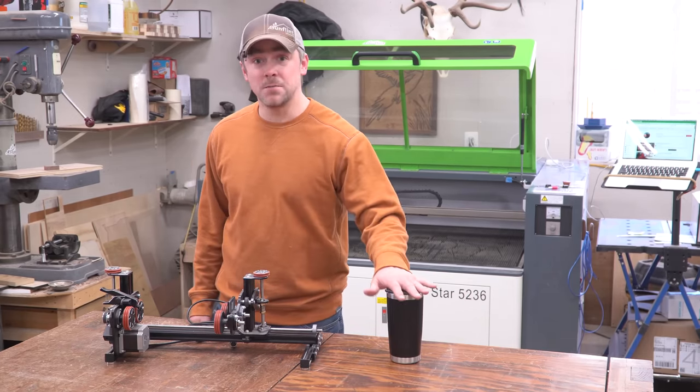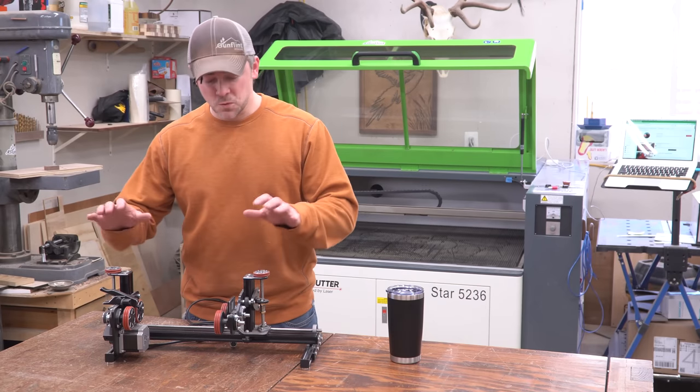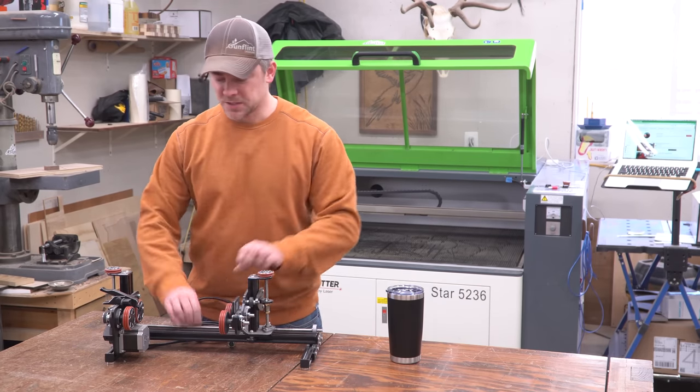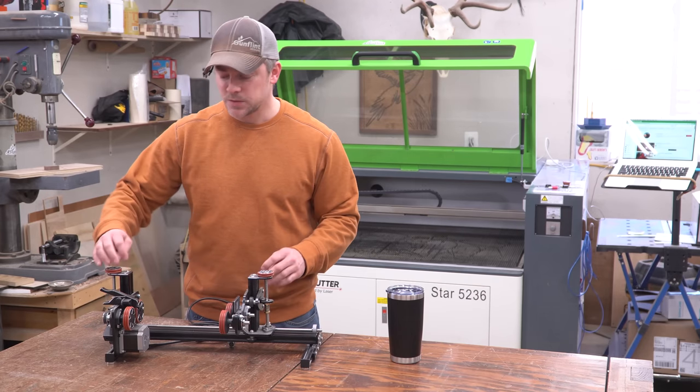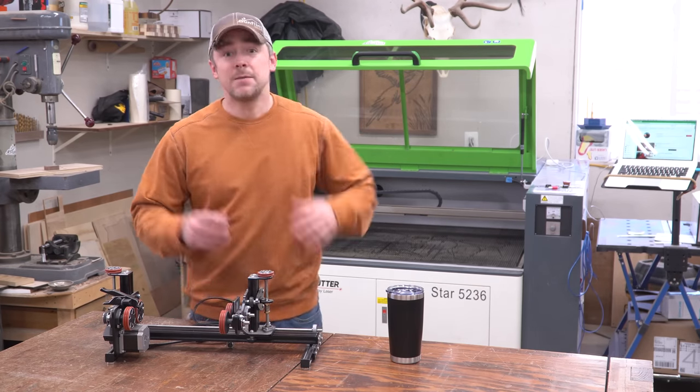Today's project is I have to do a bunch of these tumblers, so I'm going to be using my new Rotoboss Rotary which is super adjustable and really easy to set up and use. So we're going to get that shoved in the machine and I'm going to show you how to use it.